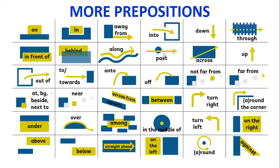Look at the green. En este caso, el objeto del que estamos hablando es en el color green donde está escrita la preposition. On, in, away from, into, down, through, in front of, behind, along, past, across, up, out of, to or towards, onto, off, not far from, far from, at, by, beside, next to, near, across from, opposite, between, turn right, around the corner, under, over, among, in the middle of, turn left, on the right, above, below, straight ahead, on the left, around, against.